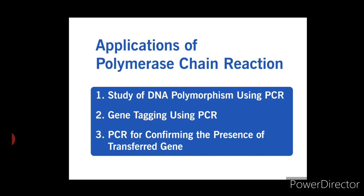First, study of DNA polymorphism using PCR. DNA polymorphism is amplified using PCR and can be used to study loci either with known DNA sequence or at random sites. Both can be amplified. PCR can be used to study RFLP as well as RAPD.